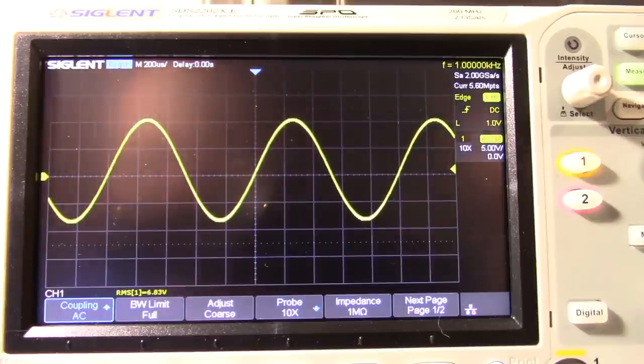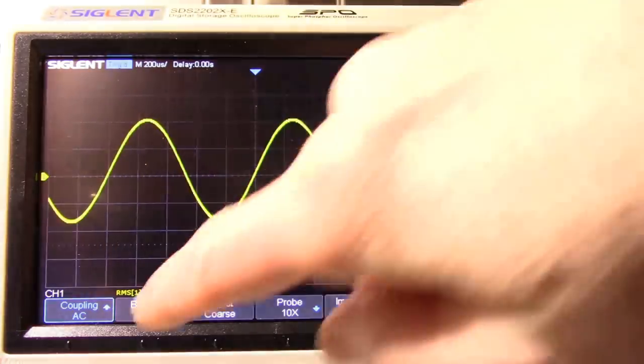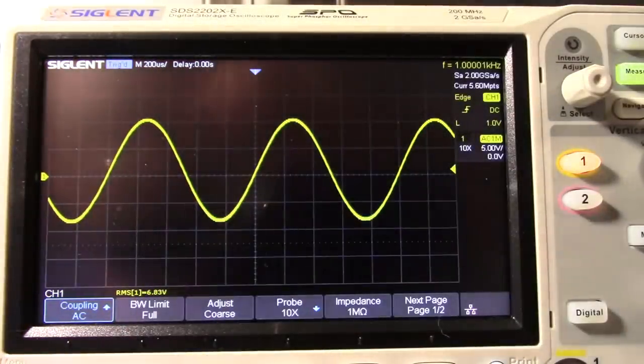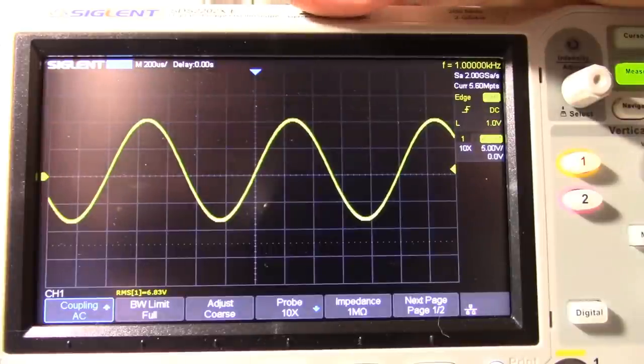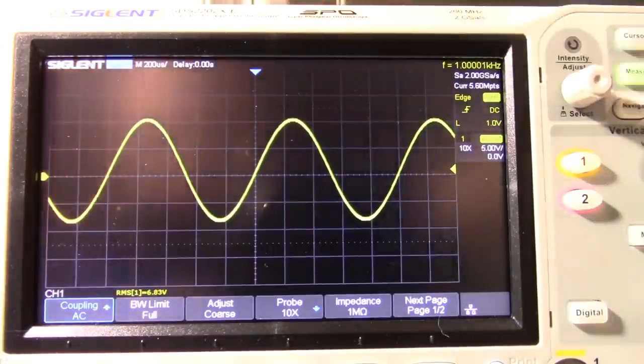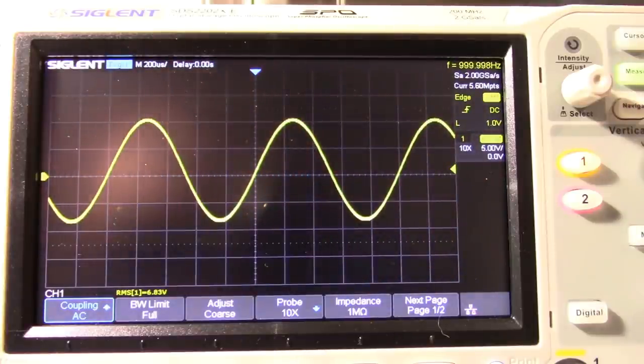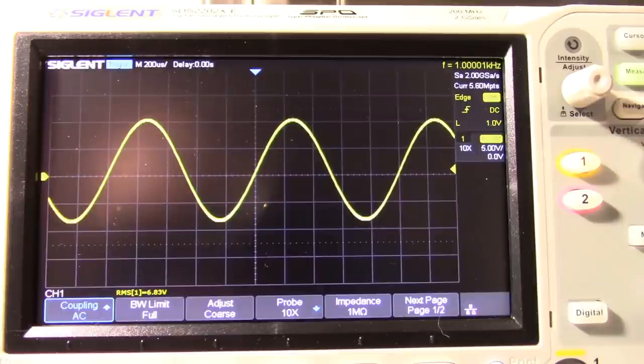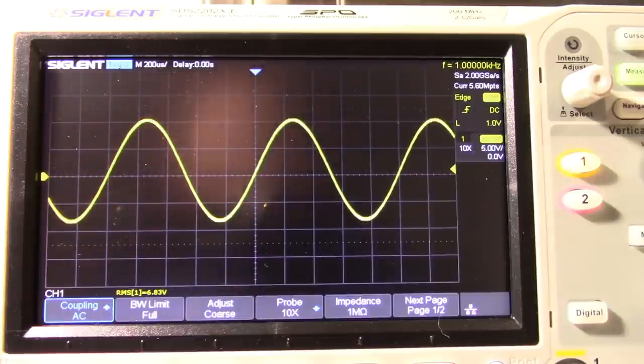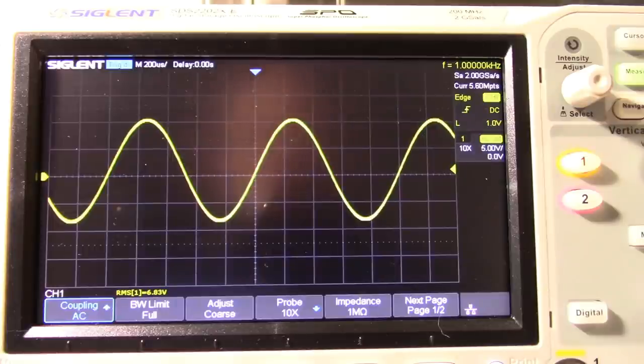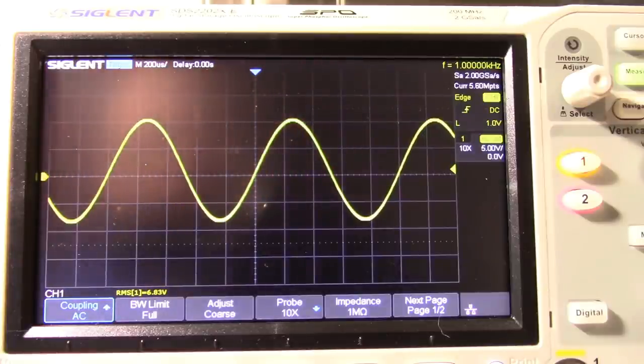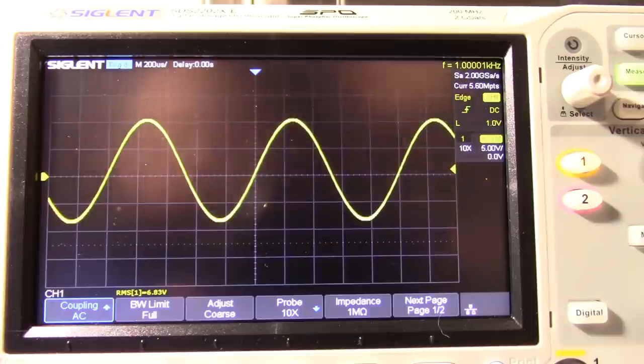And, they put the text so small on these new scopes. 6.83 it looks like. Let me see what that is when I grab my calculator here. 6.83 squared divided by 4. Getting 11.66 watts. So, actually, that's doing pretty well. That's specced around 12 watts.